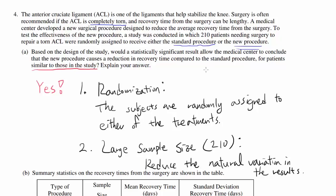I want to point something out: if you write 'random sample,' that is wrong and you will get points taken off. We do not necessarily have a random sample — we are just testing 210 patients. The randomness comes in when we are randomly assigning them to the treatments, not necessarily in how we are picking them. So we don't know if the outcome generalizes to every person on earth, but it should generalize for patients similar to those in the study. Random sampling is not necessarily occurring, but randomization is happening.